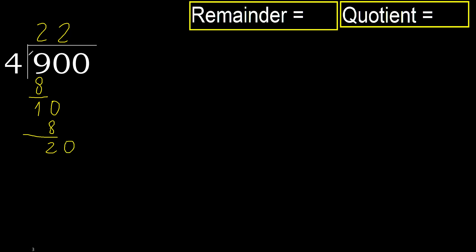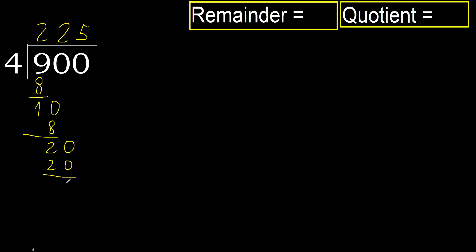Bring down: 20. 4 multiplied by 5 is 20 — is not greater. Ok, subtract. Next: there is no more number, therefore finish it.